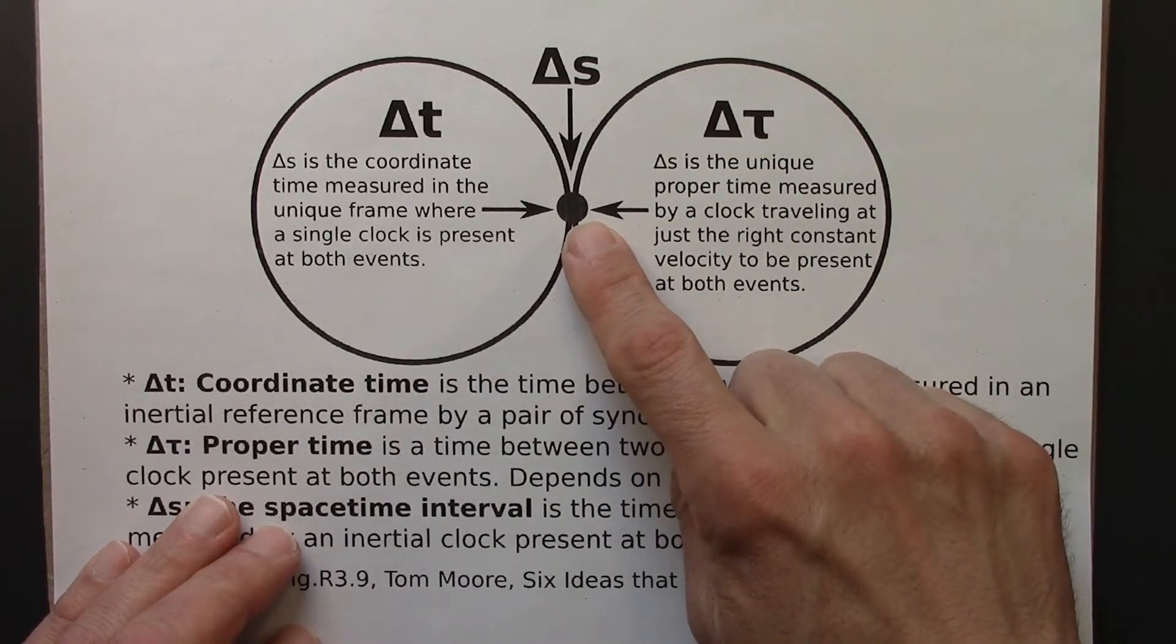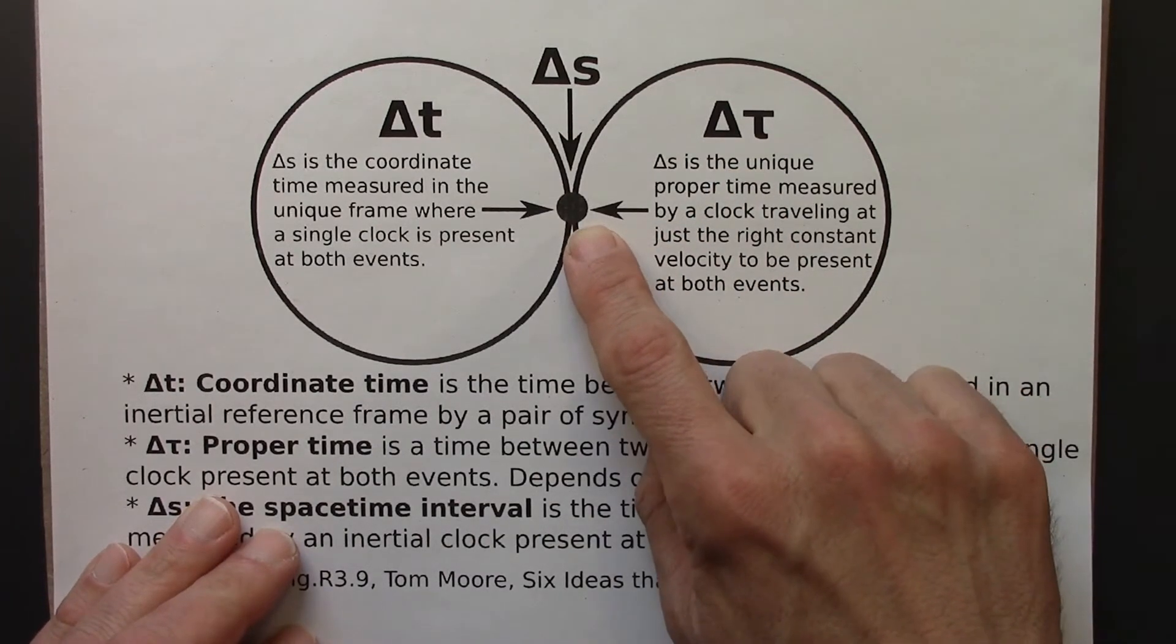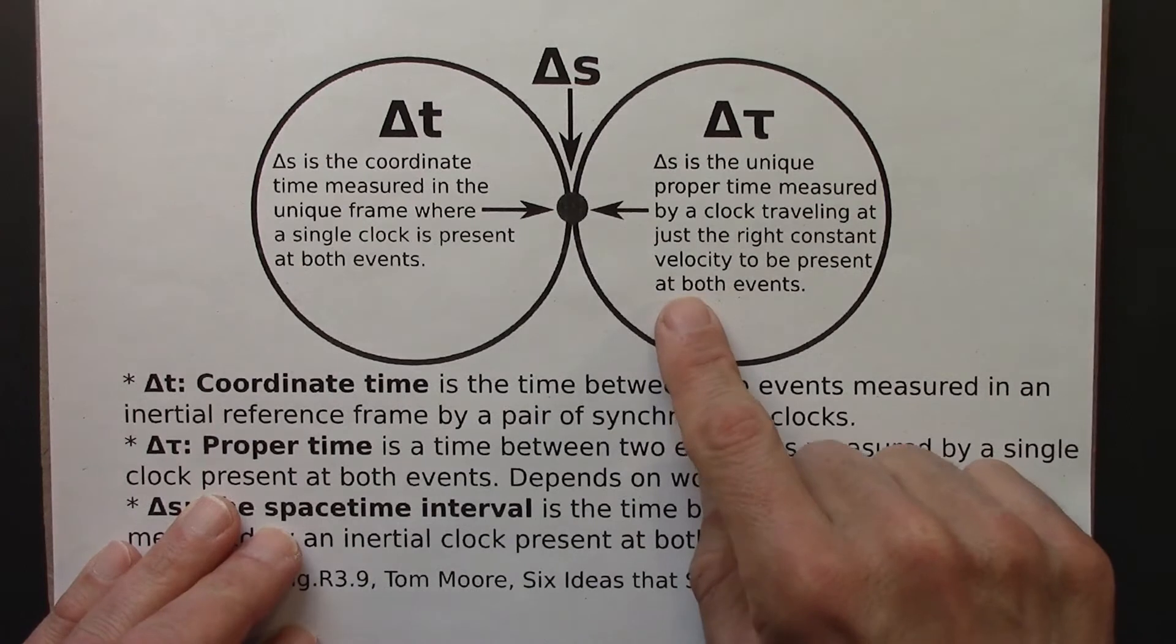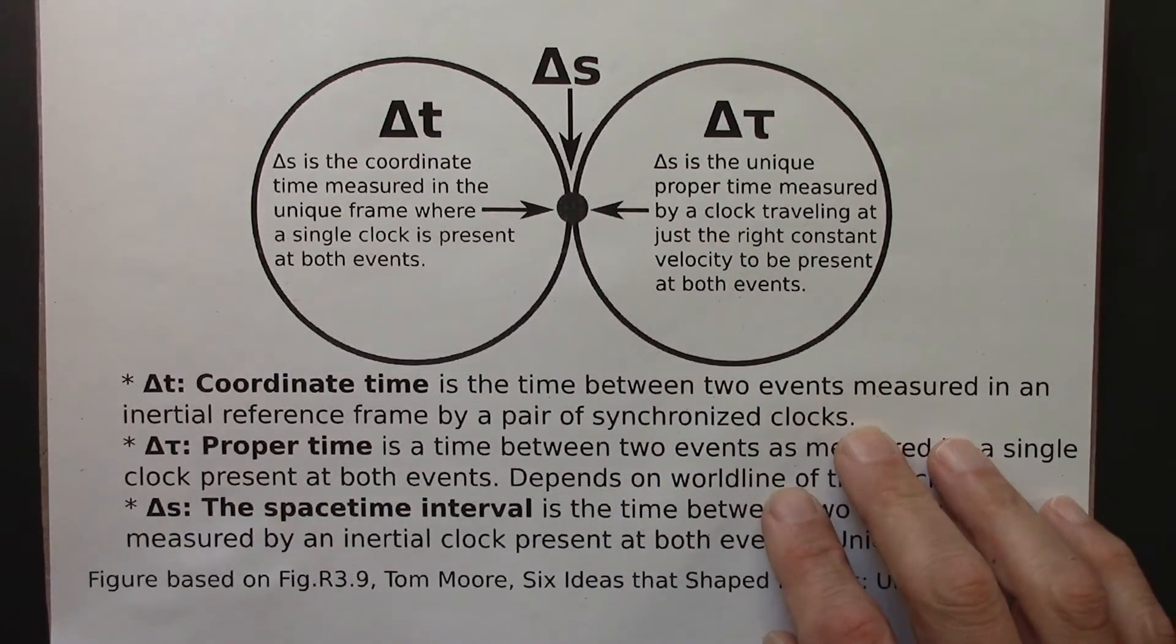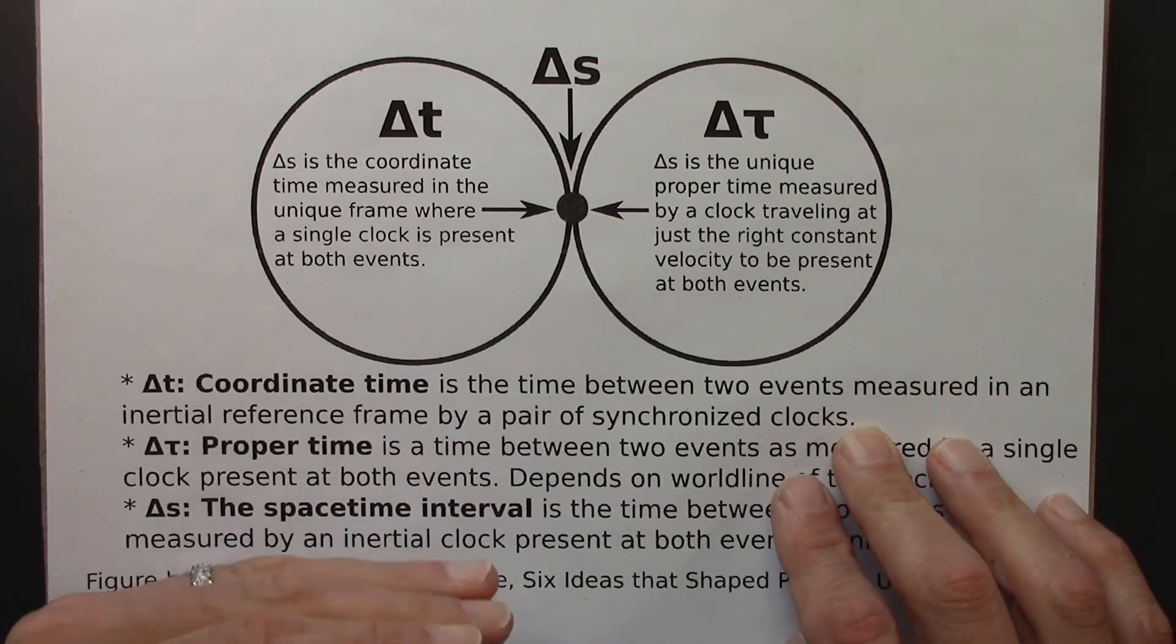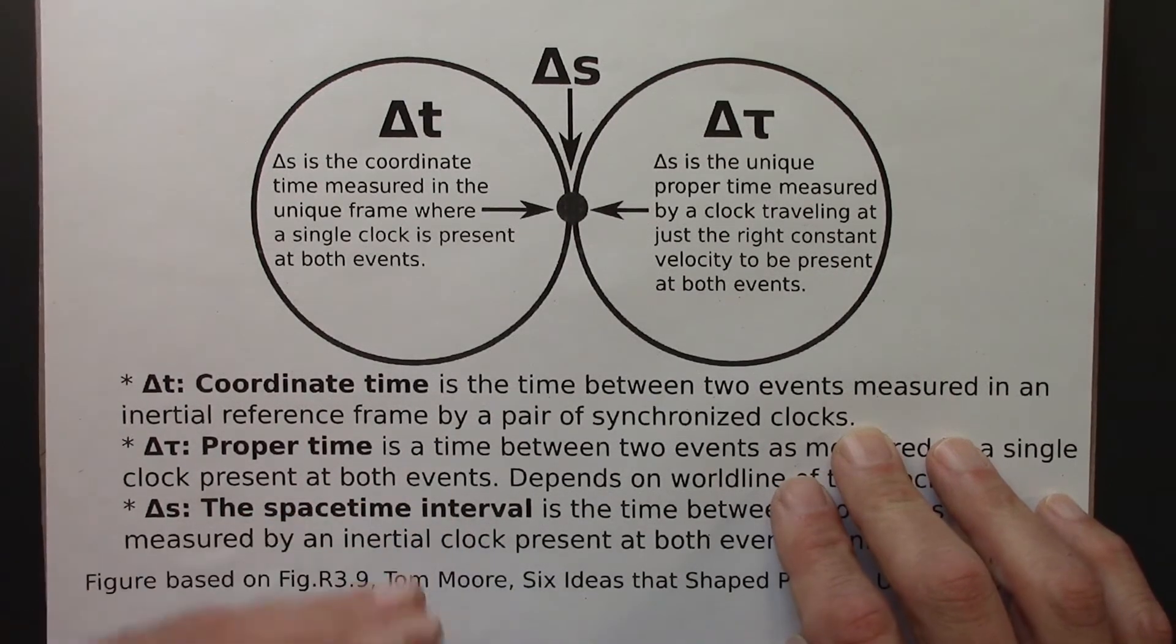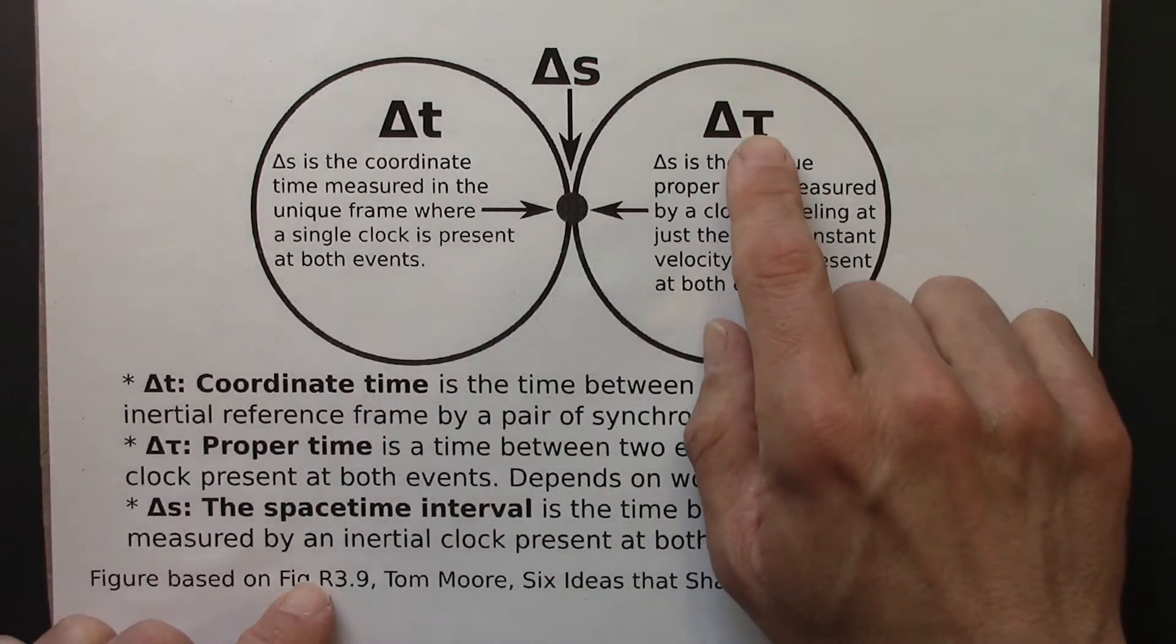But there's a special delta tau, a special situation. And that's when the clock that's present at both events is an inertial clock. It's moving at a constant velocity. It's going at just the right speed, and it's a constant speed, and it happens to be present at both of those events.